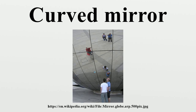Round convex mirrors called Oeil de Sorcier were a popular luxury item from the 15th century onwards, shown in many depictions of interiors from that time. With 15th century technology, it was easier to make a regular curved mirror than a perfectly flat one.